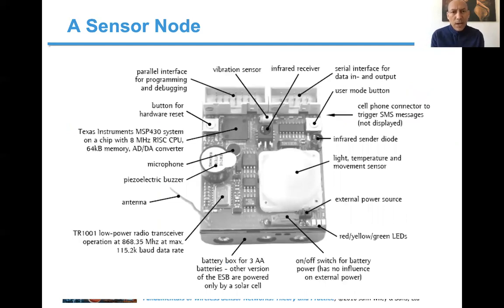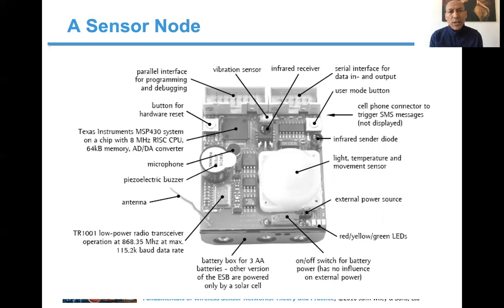Here is an example of how a wireless sensor node looks. As you can see, there are many components — not all of them are essential. Which components are necessary depends on the application. We're going to see different types of applications for wireless sensor networks in the upcoming chapters. For our case, here we have a vibration sensor, temperature sensor, humidity sensor, and pressure sensor integrated in this simple sensor node.